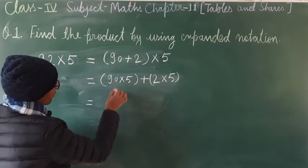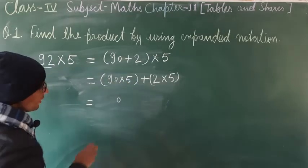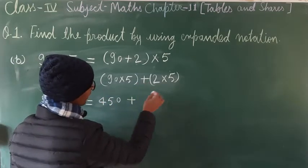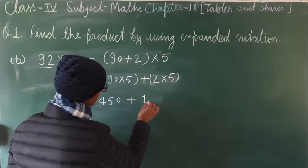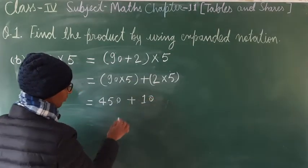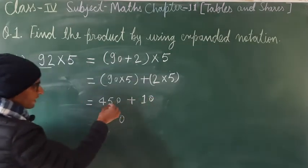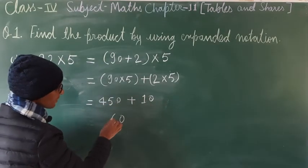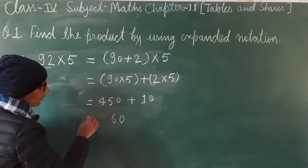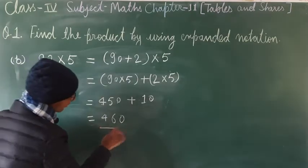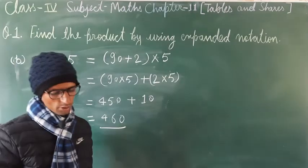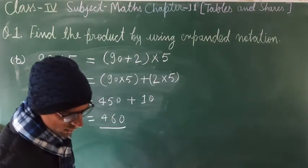Third step: 5 × 0 = 0, 5 × 9 = 45, so 90 × 5 = 450. Then 5 × 2 = 10. Addition: ones place 0 + 0 = 0; tens place 1 + 5 = 6; hundreds place 4. So the answer for 92 × 5 is 460.